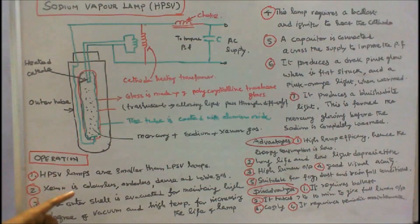Xenon is colorless, odorless, dense, and noble gas. The outer shell is evacuated for maintaining high degree of vacuum and high temperature for increasing the life of the lamp.